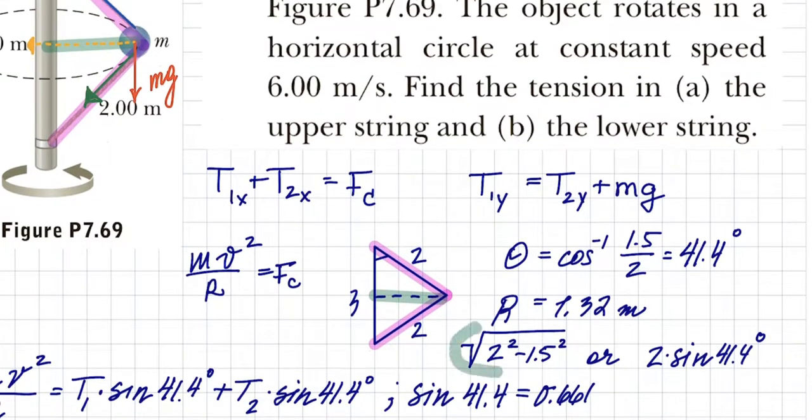You can either do Pythagorean theorem—Pythagorean theorem squared minus one of the legs, and one of the legs is one half of three, so one point five—or you could do two sine of forty-one point four. Where did I get the forty-one point four?